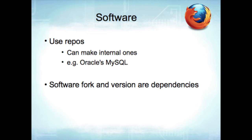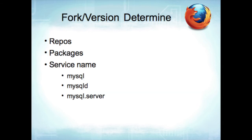The software fork and version determine the repo, the package you're going to use, and also the service name. The service name might be mysql, mysqld, or mysqld.server depending on the variant. We've used mysqld.server — it's all there. The fork and version are dependencies themselves: if you want to install the MySQL client, you need to know what you're using. If you're using MariaDB, install MariaDB client; if using Percona Server, use Percona Server client.